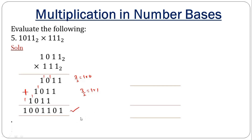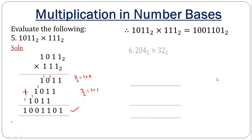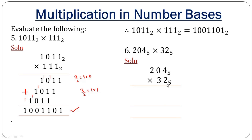For the next example, we are multiplying in base 5. We multiply 2 times 4, which equals 8. But recall you are in base 5 and cannot record 8. Just as before, divide 8 by 5, which gives 1 remainder 3. Record 3 and carry the 1. Then 2 times 0 is 0, plus the carried 1, giving that result. Then 2 times 2 is 4.